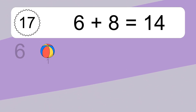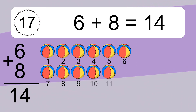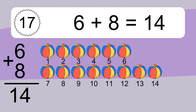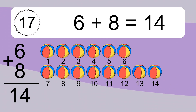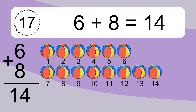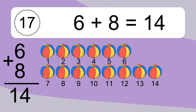6 plus 8 equals what? 6 plus 8 equals 14. Let's count it. 1, 2, 3, 4, 5, 6, 7, 8, 9, 10, 11, 12, 13, 14.